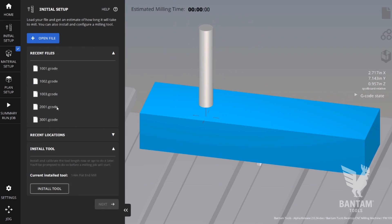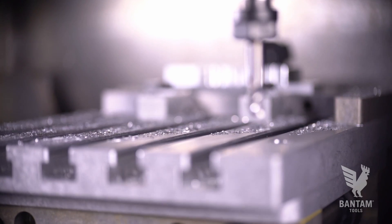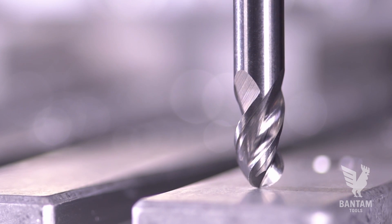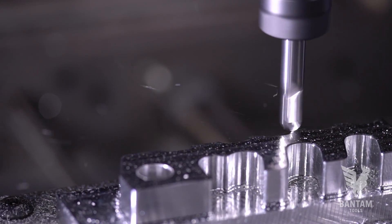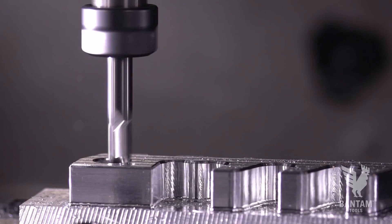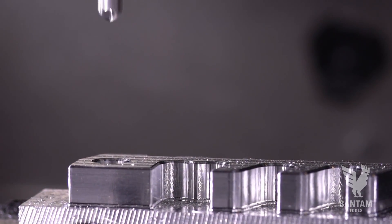Once the first operation is complete, we'll load the file for op 2 and insert our quarter inch ball end mill and run the next job. Because we're using the same work coordinate system, we don't need to re-probe for this job. Okay, fillet complete.